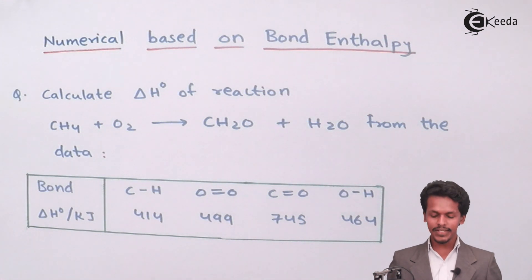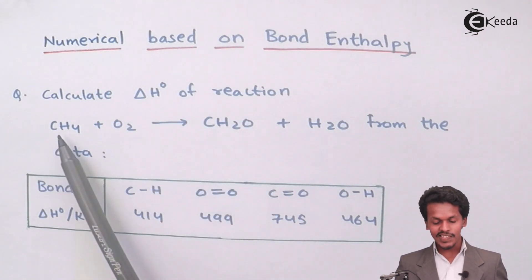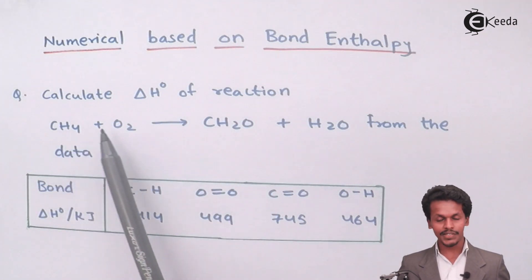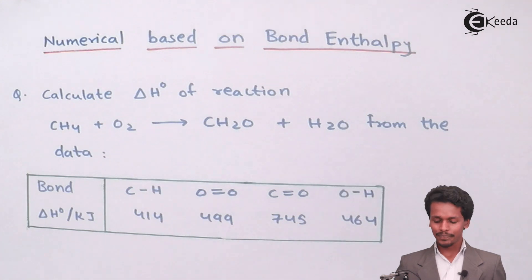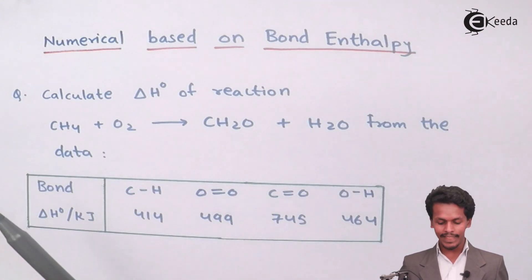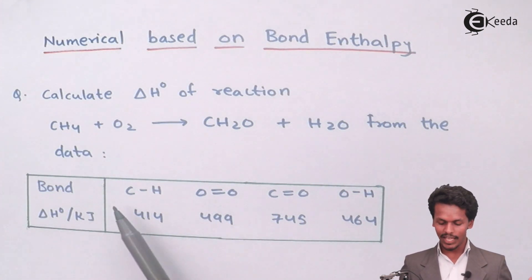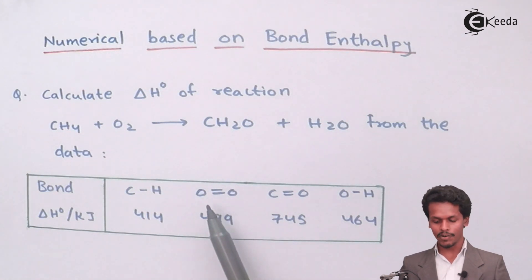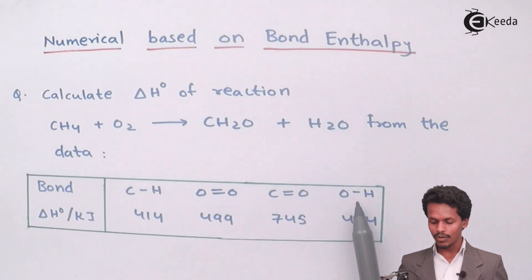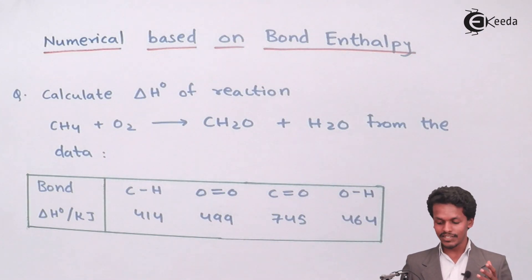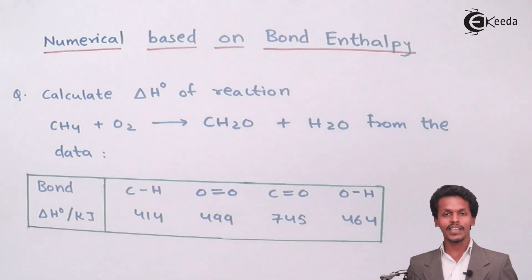The question given to us: we have to calculate the heat of reaction, or the enthalpy of the reaction. The reaction is methane combustion — CH4 plus O2 giving CH2O plus H2O. The bond enthalpy data provided is: C-H = 414 kJ, O=O = 499 kJ, C=O = 745 kJ, and O-H = 464 kJ.